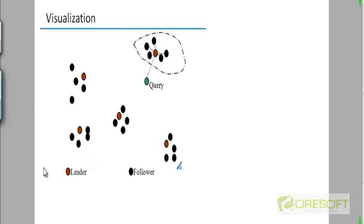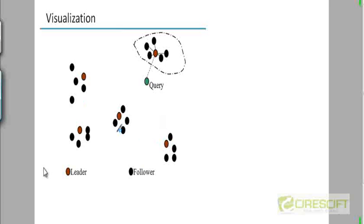Here is a visual depiction. Each document is depicted as a dot. You can see that there are five clusters formed. There are five leaders chosen because there are 25 documents — n is 25 — so you choose square root of 25, which is 5.